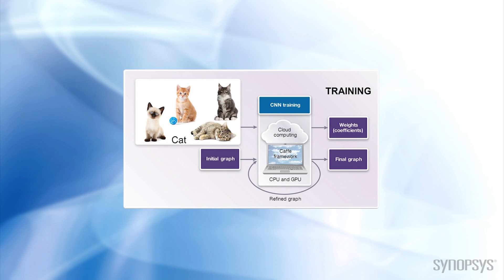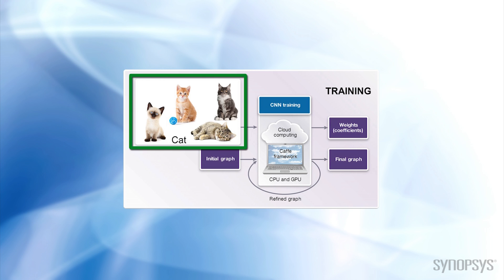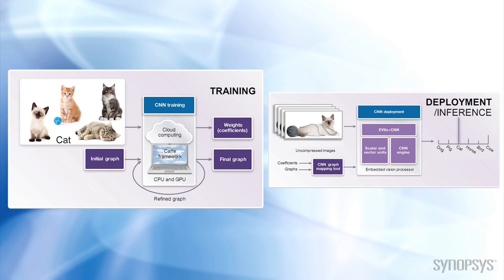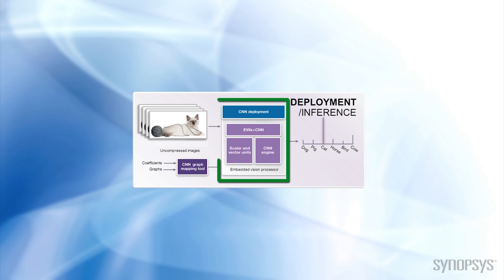Deep learning training for a machine is done on a high-end computer. Labeled images of cats are fed into a neural network, which breaks the images down using convolutions, and the neural network learns by adjusting the weights or coefficients with each iteration. After many, many images and even more computations to obtain a set of well-trained and validated coefficients, the graphs and weights are transferred from the computer into the machine — in our case an embedded vision processor — which can be optimized for performance and low power.